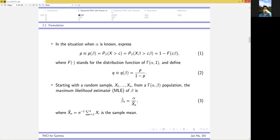Starting with the random sample x1 to xn, we consider the maximum likelihood estimator of beta, which turns out to be alpha over the sample mean, so that we are able to estimate the probability of interest.